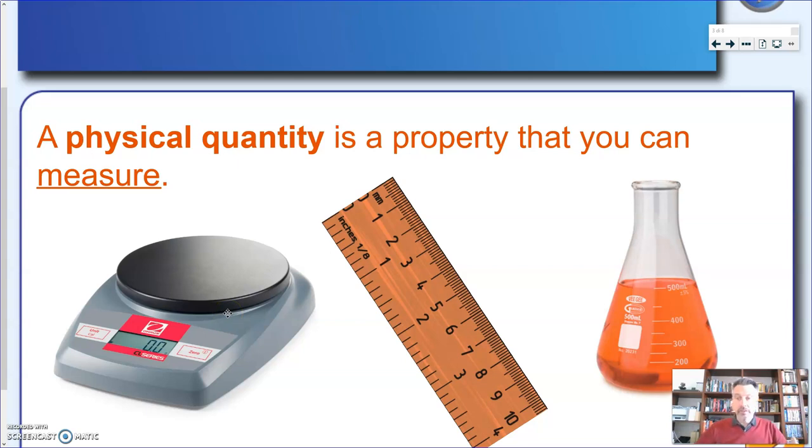So for instance, if you can measure it with an electronic balance or with a ruler or with any measuring cylinder or conical flask, then it's a physical quantity. If there's no way you can measure it, then it's not a physical quantity.